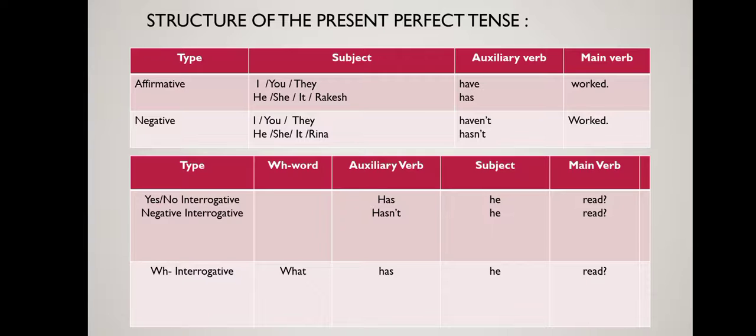In a yes/no interrogative sentence, the auxiliary verb 'has' comes first, then the subject 'he,' then the main verb — for example: 'Has he read?' For a negative interrogative: 'Hasn't he read?' For a wh-interrogative: 'What has he read?'